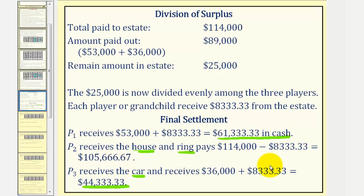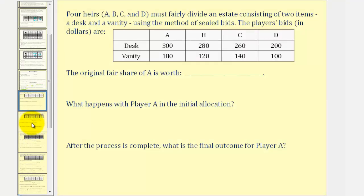Now let's look at another example. Four heirs, A, B, C, and D, must fairly divide an estate consisting of two items, a desk and a vanity, using the sealed bids method. The player's bids in dollars are given here in the table. The first question: the original fair share of player A is worth what?